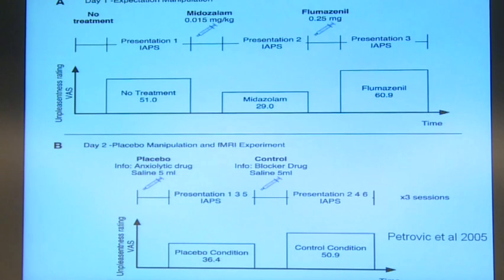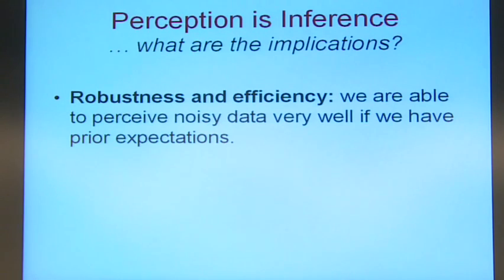So this is a demonstration that even at the emotional level — the very fundamental processing of these pictures — you can change it by their prior expectation. So if perception is inference, and I think everything that we see points in that direction, what are the implications of this?